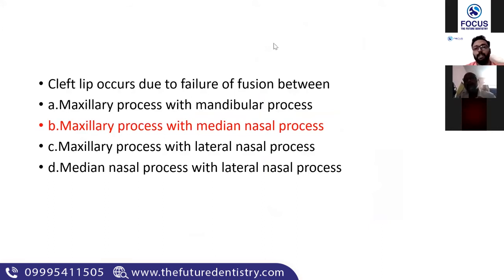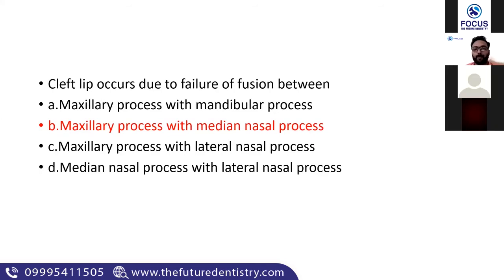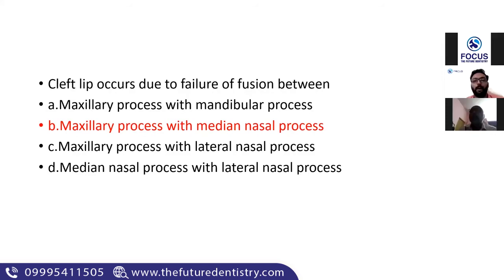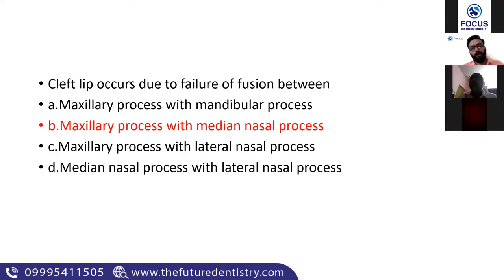When reviewing options: Option A — maxillary process with mandibular process failing to fuse — gives a transverse facial cleft. Option C — lateral nasal and maxillary process failing to fuse — gives an oblique facial cleft. Option D is very rare but could involve a notching in the nose. When you read the options, you should be able to figure out what each one actually means. Don't just memorize the answer — understand the related concepts so you can handle any variation of the question.